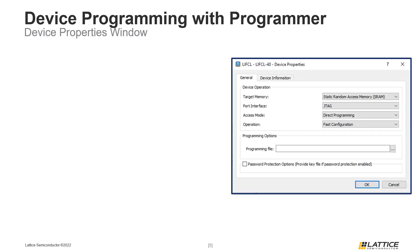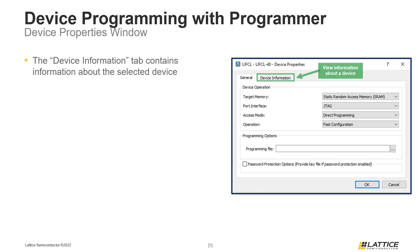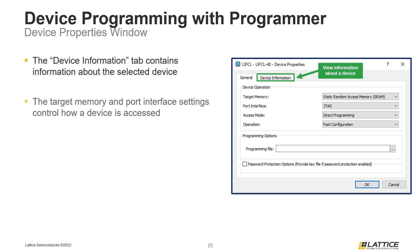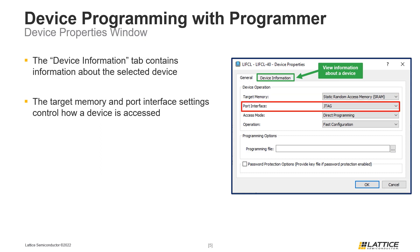The Device Properties window has two tabs. The General tab is used to set up a device for programming, and the Device Information tab is used to view information about the selected device. To set up a device for programming, a target memory should first be selected — this controls which of a device's memories are being programmed. The second setting to configure is the Port Interface, which controls the communication interface used for device programming.